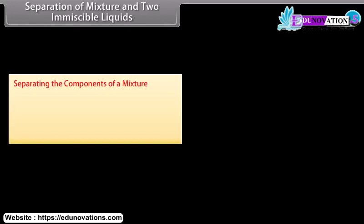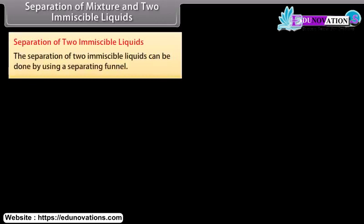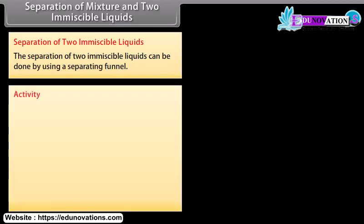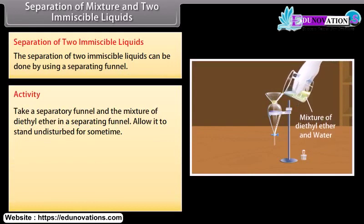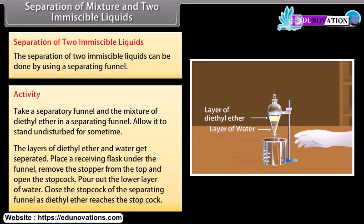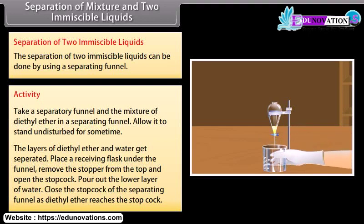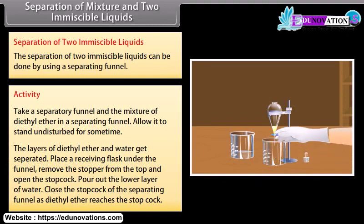Separating the components of a mixture: Heterogeneous mixtures can be separated by simple physical methods like hand-picking and filtration, but special methods are needed for other mixtures. The separation of two immiscible liquids can be done using a separating funnel. Take a mixture of diethyl ether and water in a separating funnel and allow it to stand undisturbed. The layers of diethyl ether and water get separated. Place a receiving flask under the funnel, remove the stopper, open the stopcock, and pour out the lower layer of water. Close the stopcock as diethyl ether reaches the stopcock.